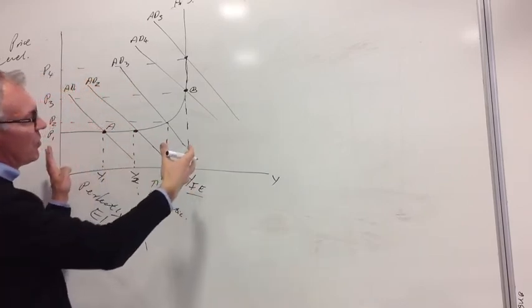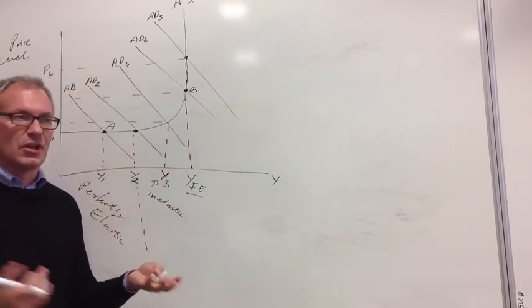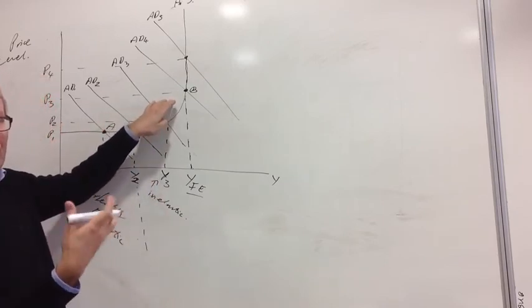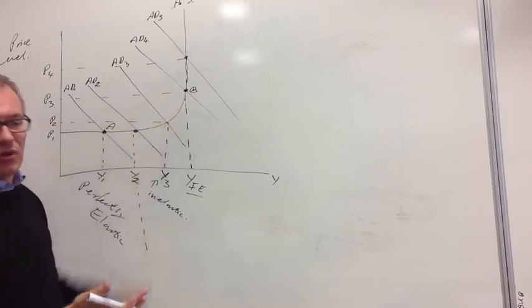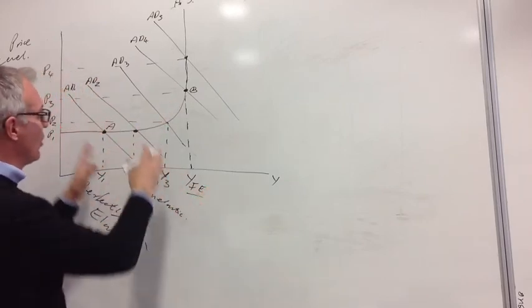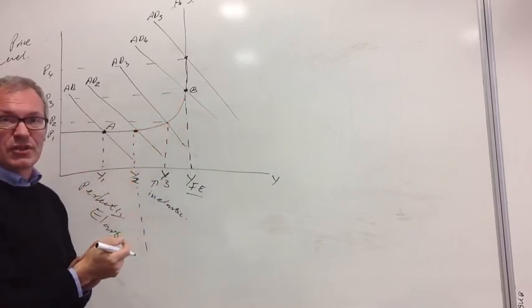So this is very useful when you come to some examples, and you're discussing whether it's wise for a government, say, to have a reflationary fiscal policy, or is it wise to have a reflationary monetary policy. It depends very much on the aggregate supply curve.